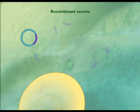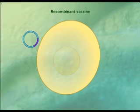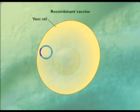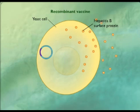For example, the gene for a surface protein of the hepatitis B virus has been placed into a yeast cell. The yeast produces the virus surface protein, which can be purified and used as a vaccine.